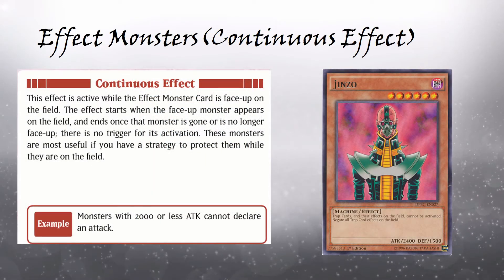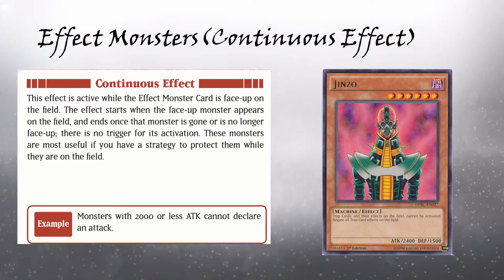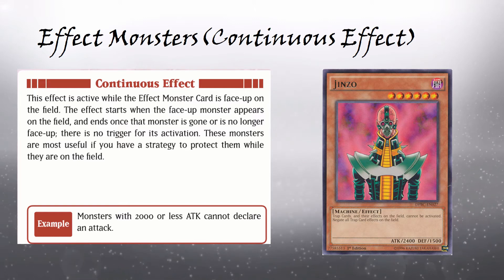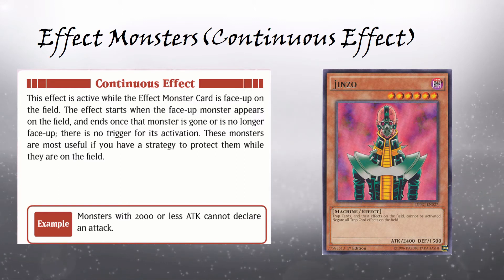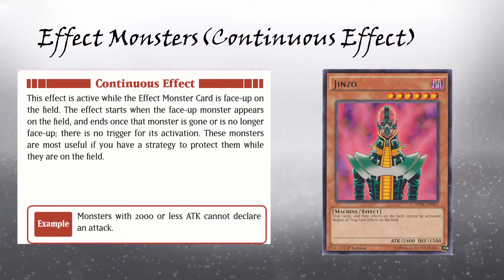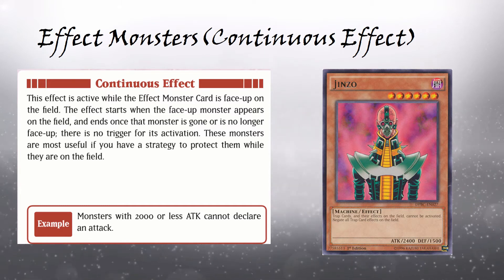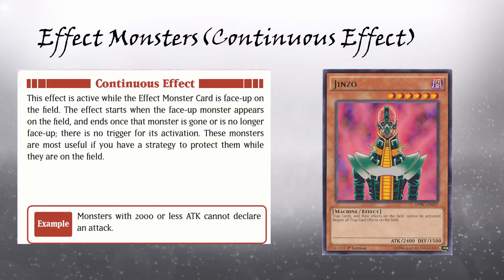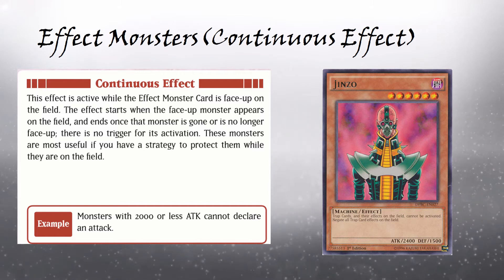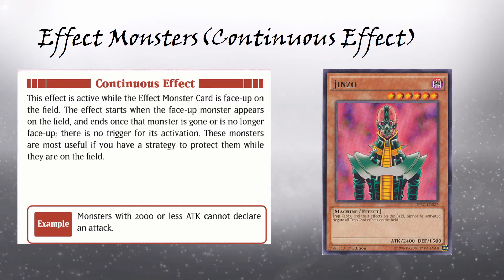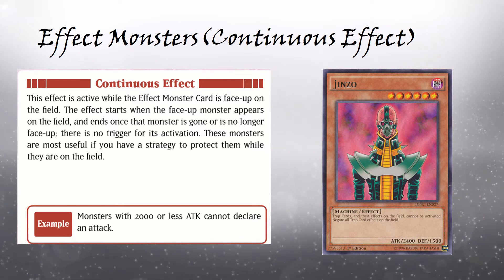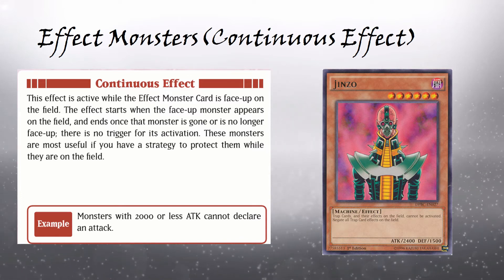First up is the Continuous Effect. This effect is active while the effect monster card is face-up on the field. The effect starts when the face-up monster appears on the field and ends once that monster is gone or is no longer face-up. There is no trigger for its activation. Jinzo is a perfect example of an effect monster with the Continuous Effect. Its effect reads: Trap cards and their effects on the field cannot be activated. Negate all trap card effects on the field.